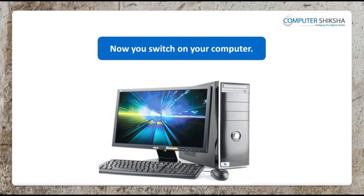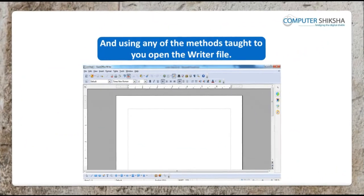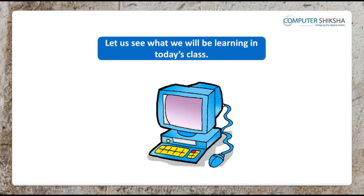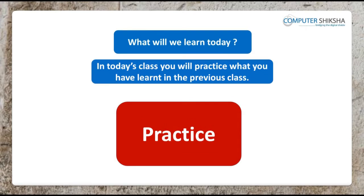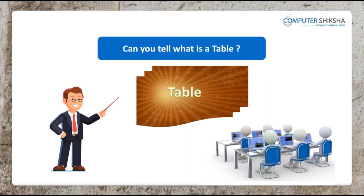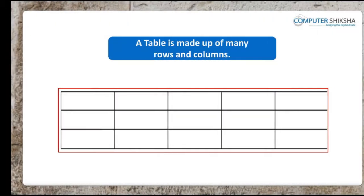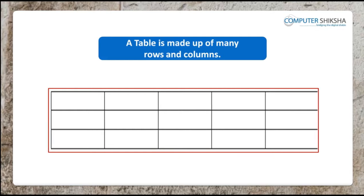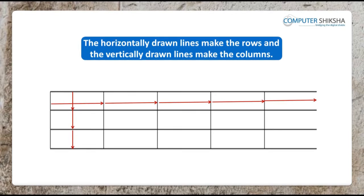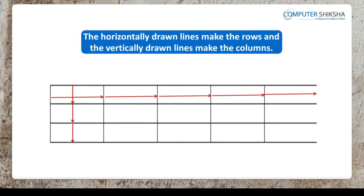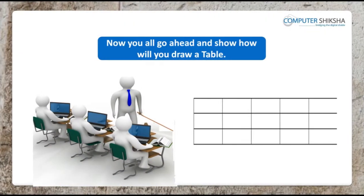Now, switch on your computer and open the writer file. Let us see what you will learn in today's class. In today's class, you will practice what you have learned in the previous class. Can you tell what is a table? A table is made up of many rows and columns. The horizontally drawn lines make the rows and the vertically drawn lines make the columns. Now, go ahead and show how you will draw a table.